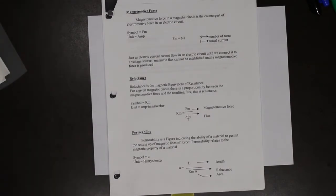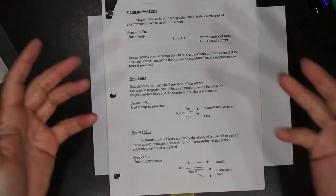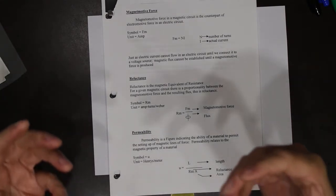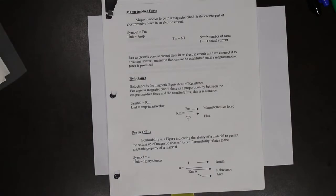Next is magnetomotive force. Magnetomotive force in a magnetic circuit is a counterpart for electromotive force in an electric circuit. Just as voltage is the force that pushes electrons along in an electric circuit, magnetomotive force is the force that pushes the flux — the magnetic field.